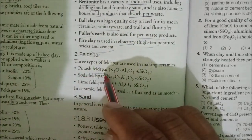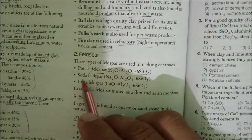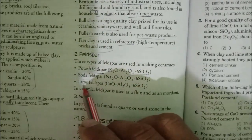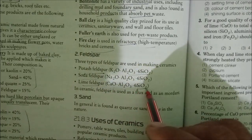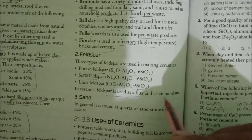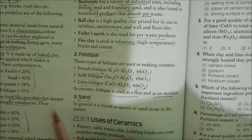There are types of feldspar: potash feldspar (K2O·Al2O3·6SiO2), soda feldspar (Na2O·Al2O3·6SiO2), and lime feldspar (CaO·Al2O3·6SiO2). In ceramics, feldspar is used as a flux and as a mordant.